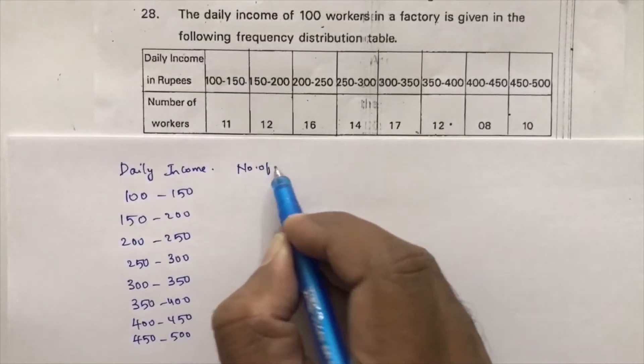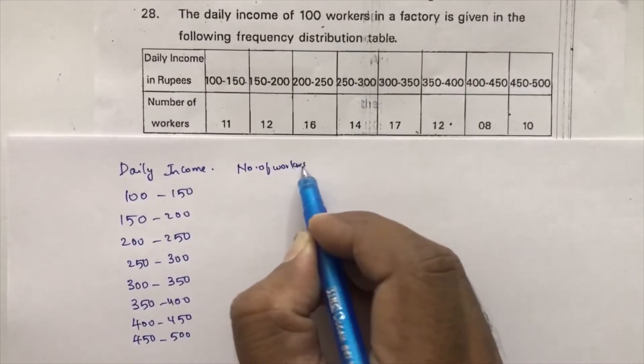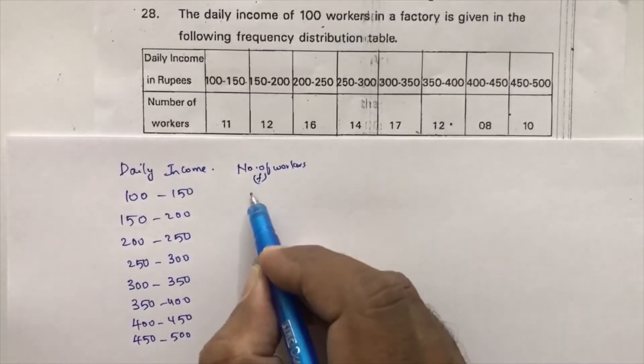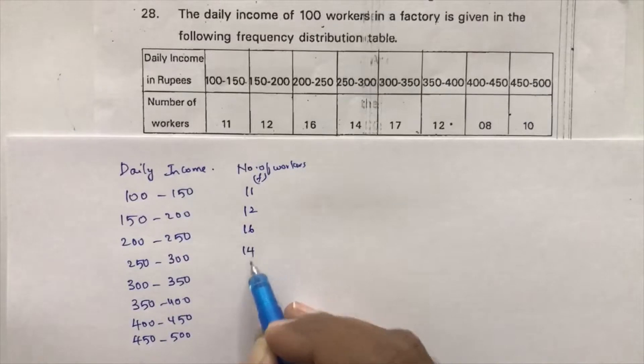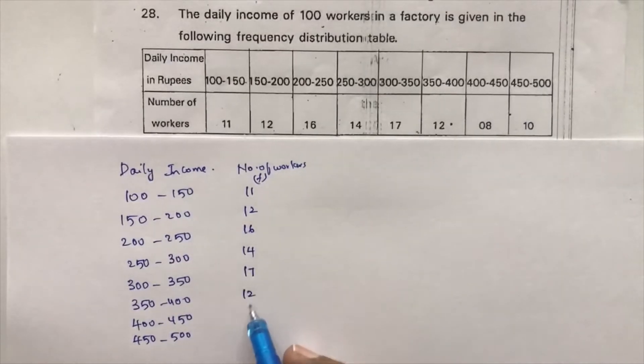So next, number of workers, that is nothing but frequency. So that is 11, 12, 16, 14, 17, 12, 8, 10.